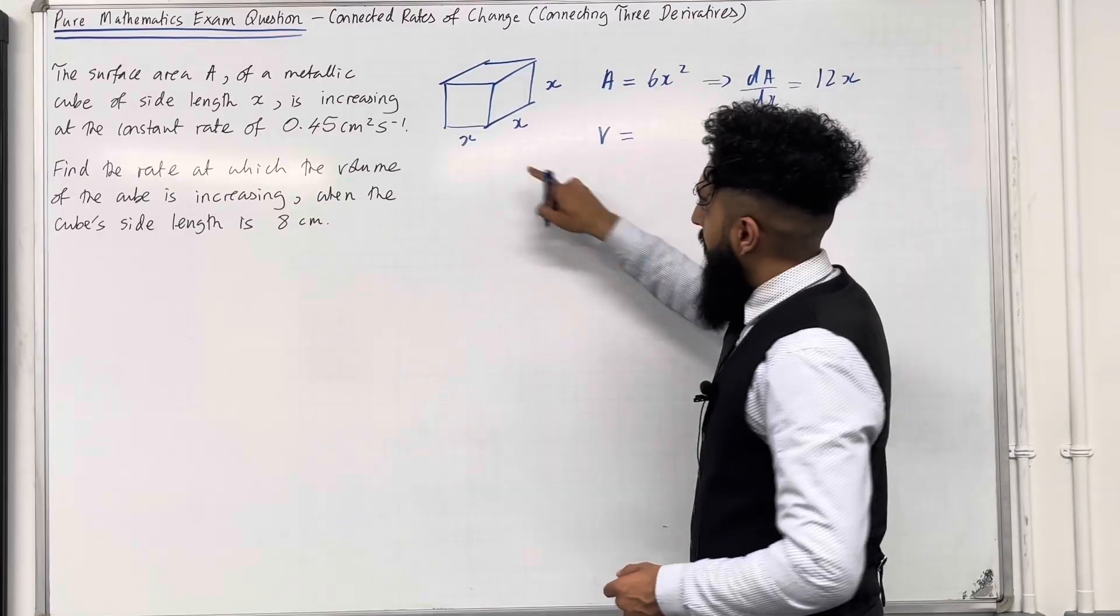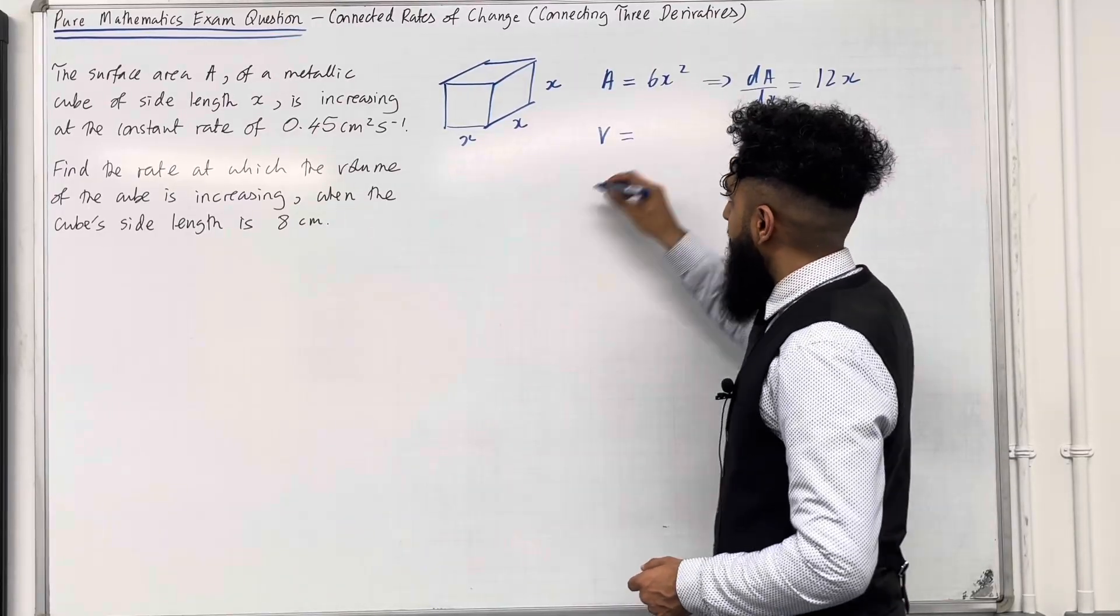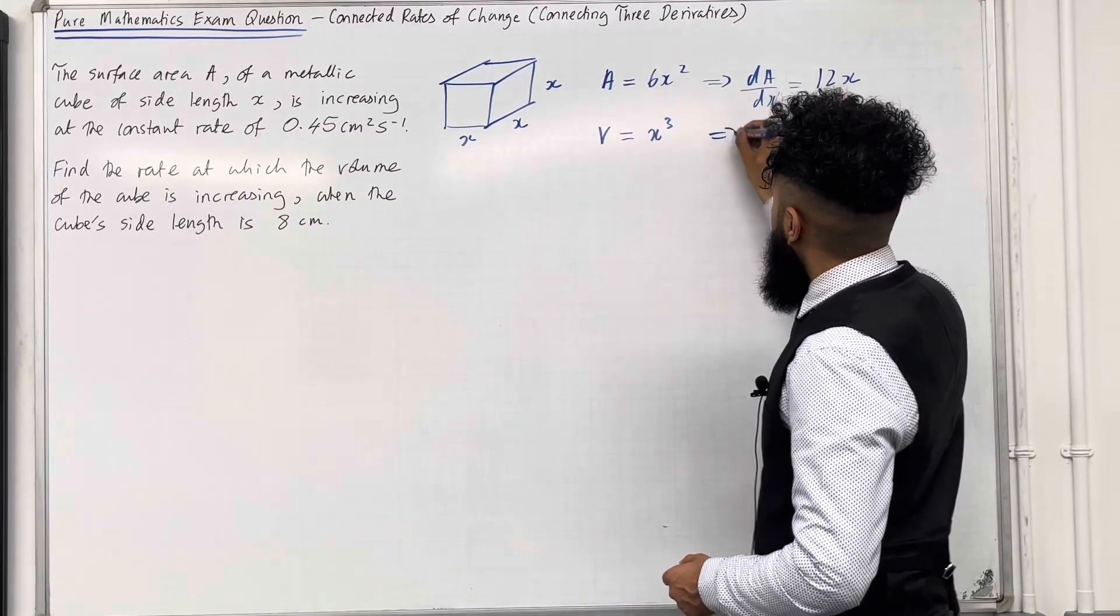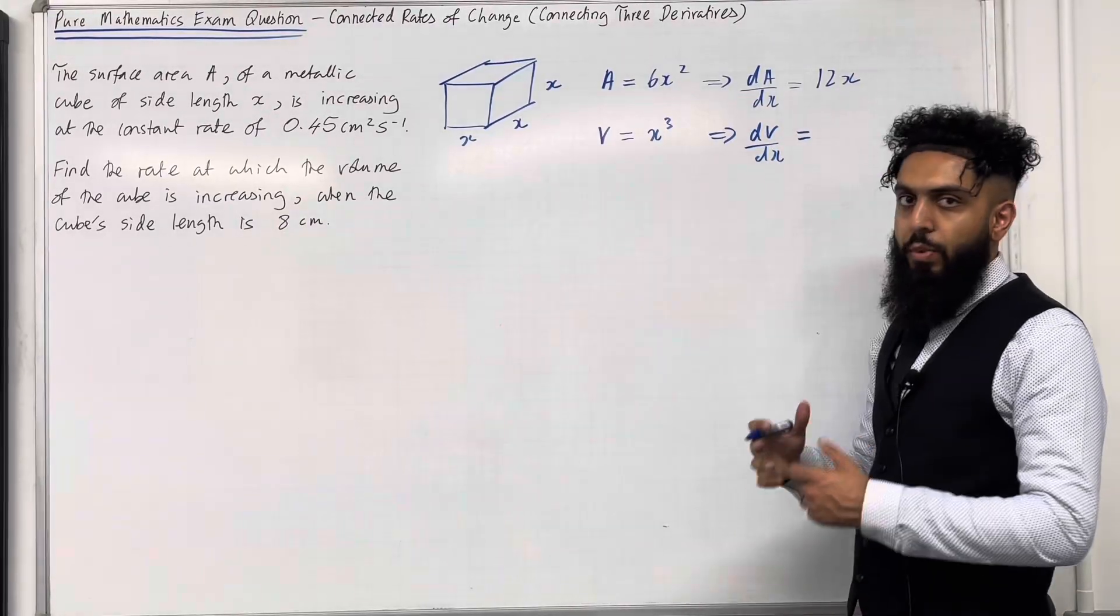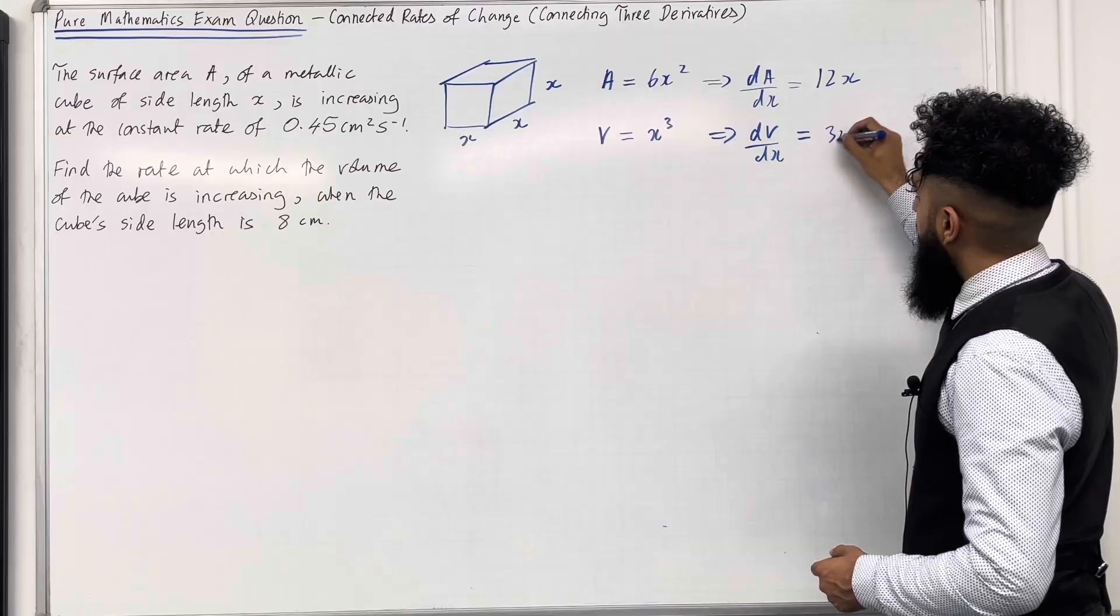The volume V is given by length times width times height, so that's X cubed. This implies that dV over dx will equal, bring down the power, subtract 1 from the power, so that is 3X squared.